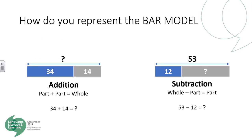Looking at addition and subtraction as inverse operations, here are the two ways that you represent addition and subtraction. For addition, we have an unknown whole but we know our two parts, so addition is part plus a part equals a whole. Whereas with subtraction, we have our total and we have one part, but we're missing our second part. So our whole take away the part that we know will tell us what our unknown part is.